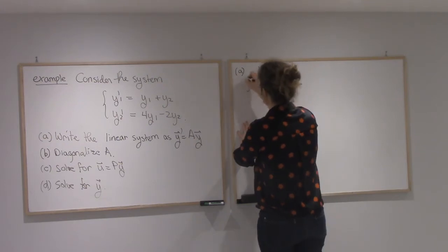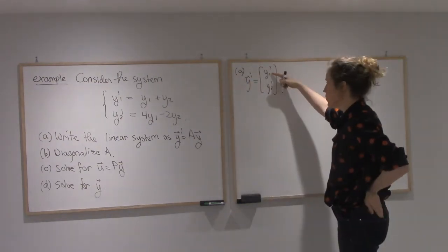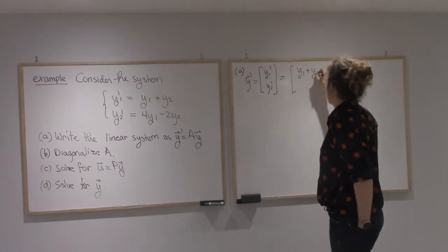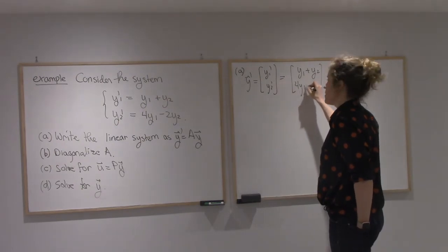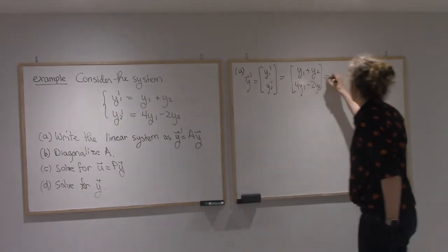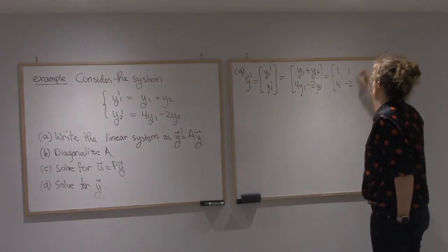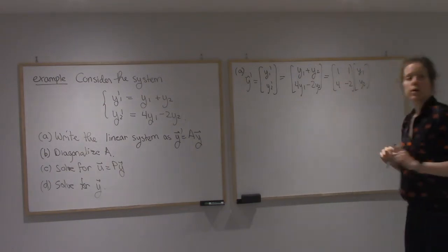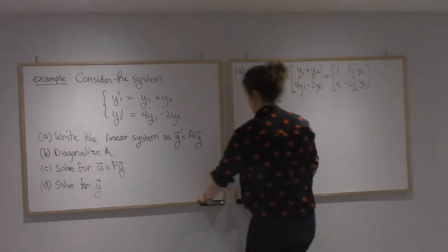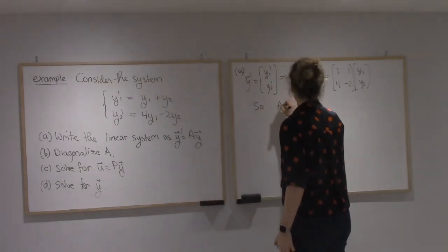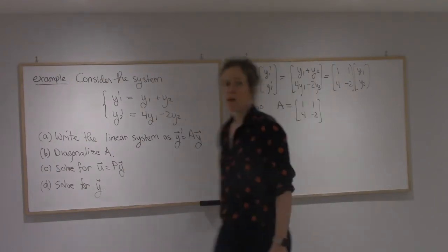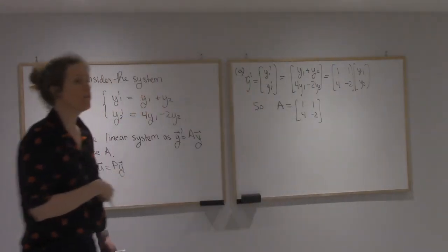Alright, so my y prime is y1 prime, y2 prime. We said that was y1 plus y2 for y1 minus 2y2. And so that's the matrix [1, 1; 4, -2] times y1, y2. Let's just double check. Yep, that works. Alright, so your matrix A is the matrix [1, 1; 4, -2].